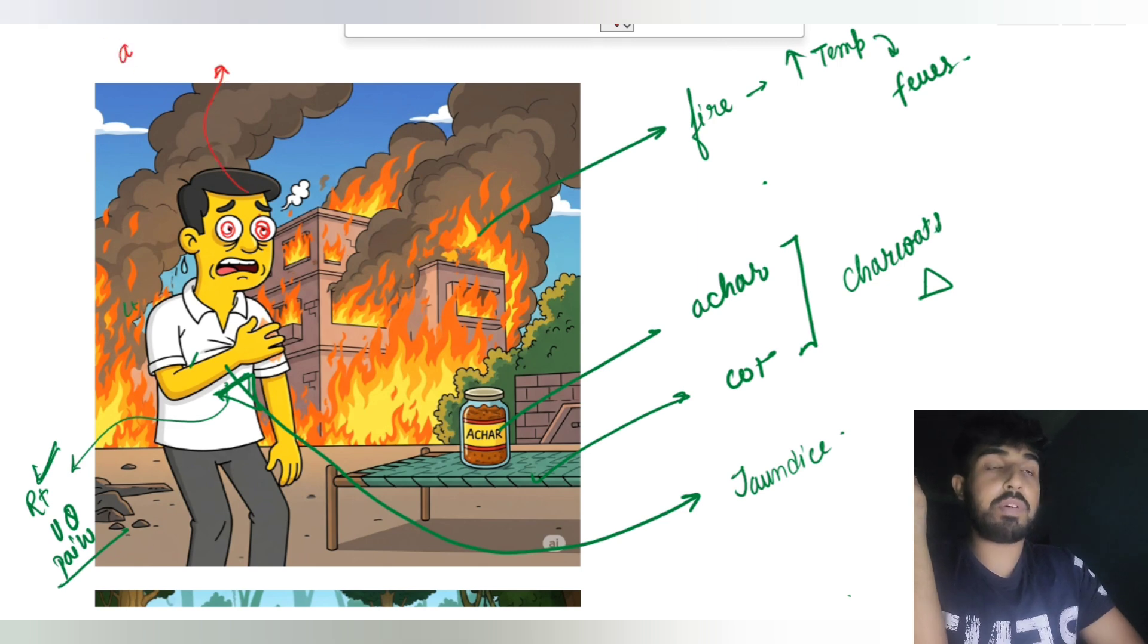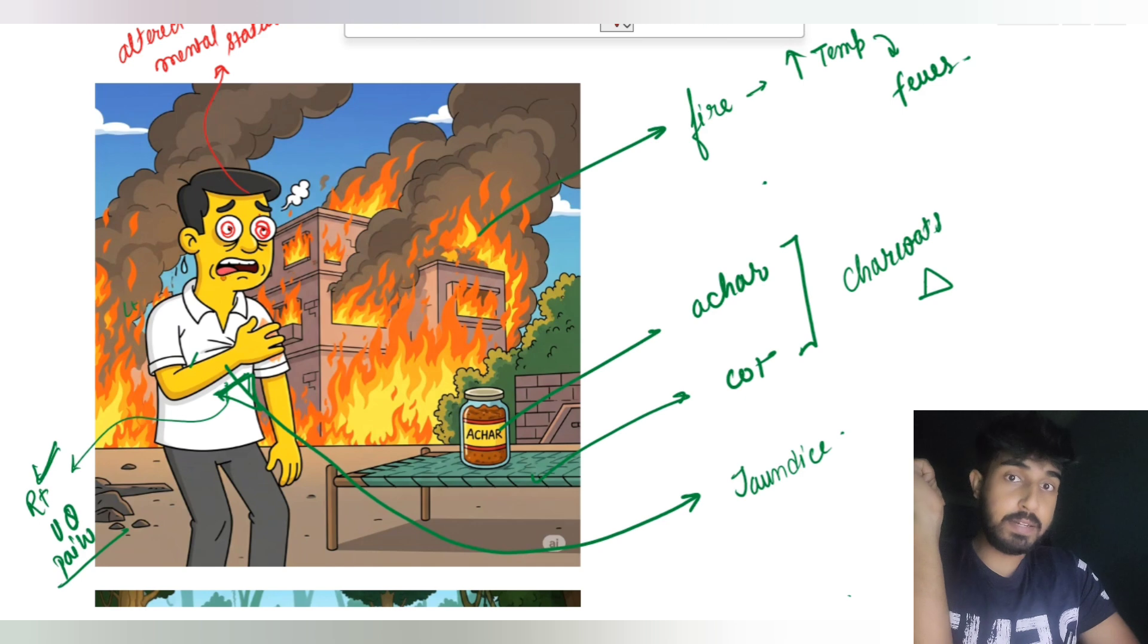So just remember, it is altered mental status. So if there is altered mental status and that Charcot came to get down, when we get down?